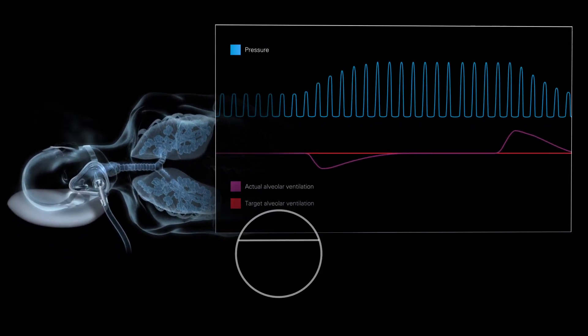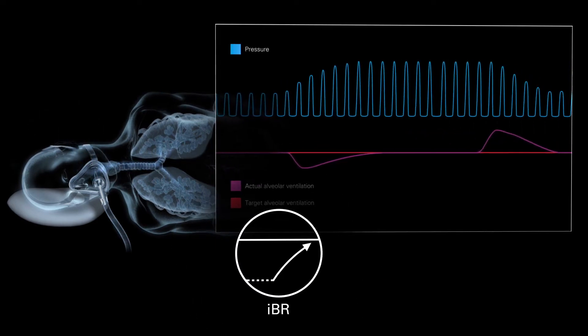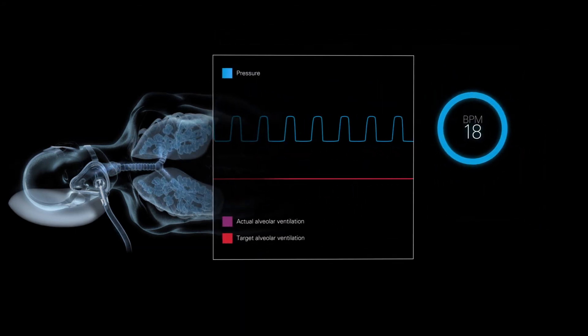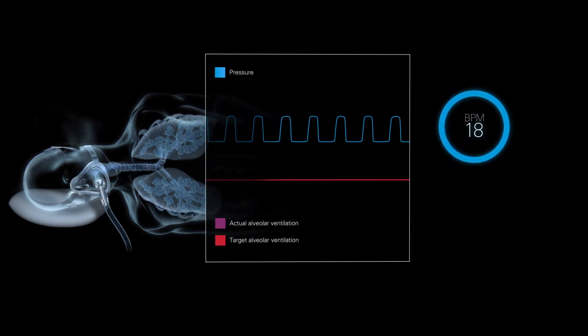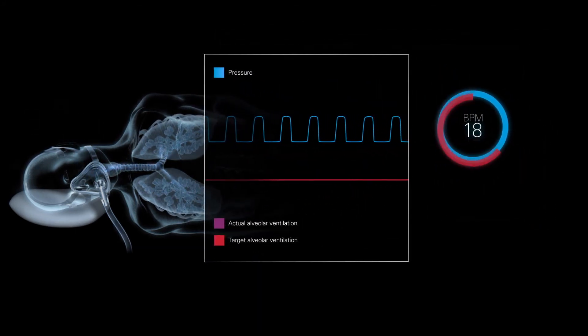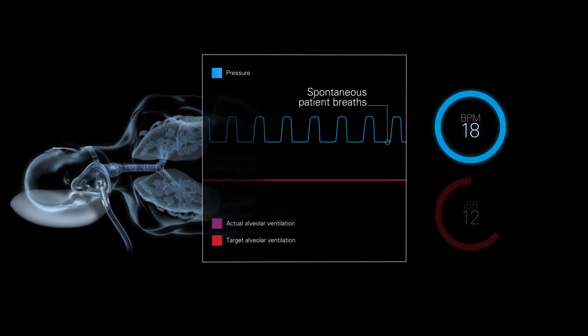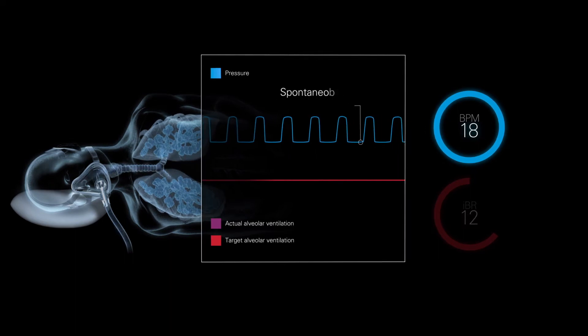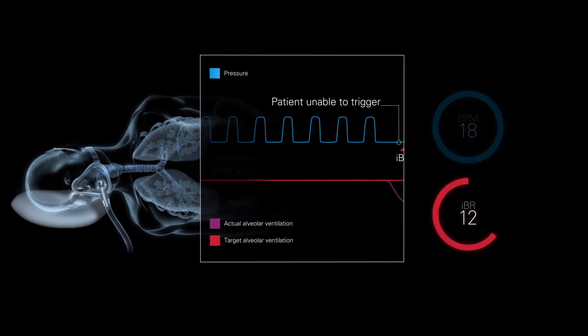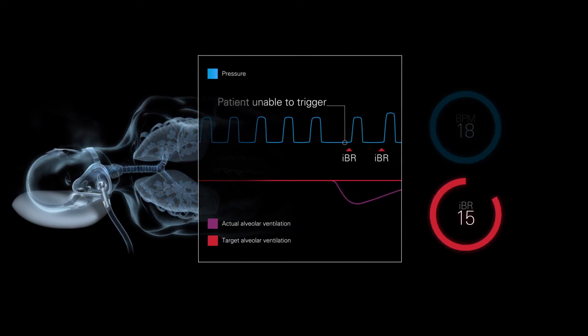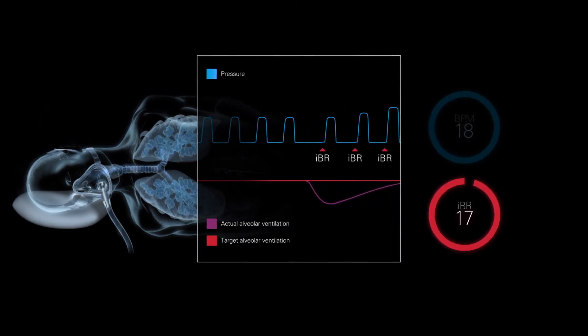Throughout this process, the Intelligent Backup Rate maximizes the patient's opportunity to breathe spontaneously. Generally, staying out of the way at two-thirds of the patient's spontaneous breathing rate, the IBR aids spontaneous triggering. If the patient is unable to trigger the device, the IBR provides backup breaths at the target patient rate to comfortably bring them back to target.